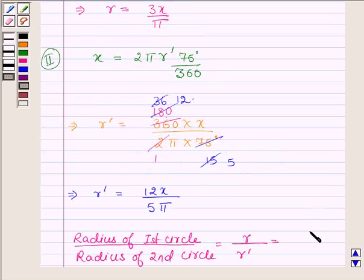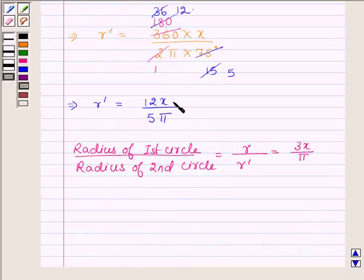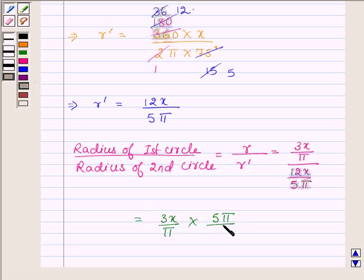And R' dash is 12x upon 5 pi, which is further equal to 3x upon pi times 5 pi upon 12x. Pi cancels out with pi, x with x, and we have 3 fours are 12. This gives 5 upon 4.